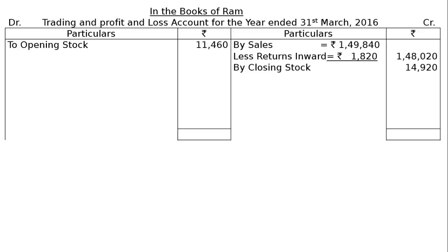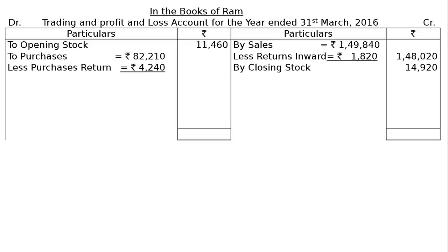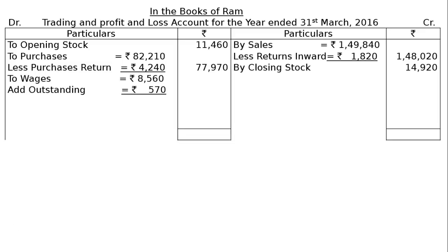On the debit side: to opening stock rupees 11,460. To purchases rupees 82,210, less purchase return rupees 4,240, giving a final column figure of rupees 77,970. To wages rupees 8,560. In the final column we will have rupees 9,130 after adding outstanding wages to wages.